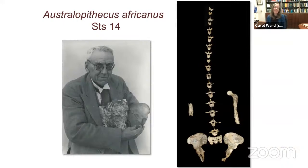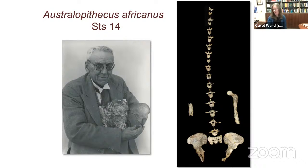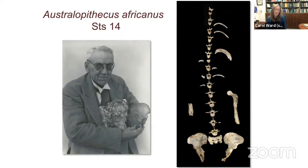STS-14 was the first Australopith skeleton discovered, published in the early 1970s by John Robinson, with Robert Broom as the discoverer. This skeleton has been really influential in understanding vertebral column morphology in Australopiths. Among the fragments from the Breccia block, I was able to find evidence of up to the lower nine ribs of STS-14, which contain some informative detail despite being very fragmentary.